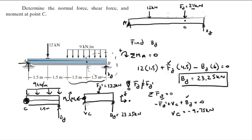The fact that it's negative means it's not going up, it's actually going down. So we correct that. Bc equals 9.75 kilonewtons going down. I'm going to put a note here that I corrected it.